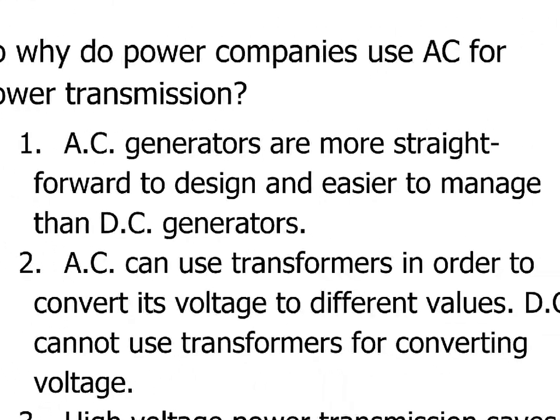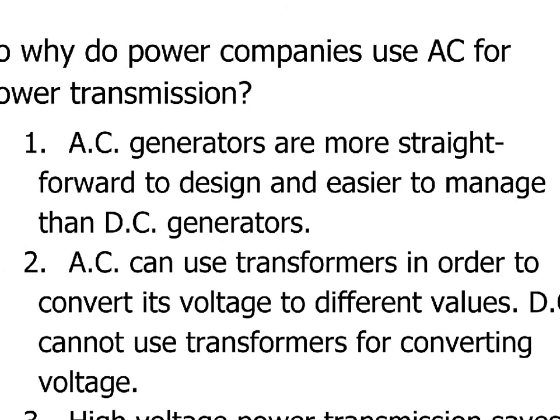There are three really good reasons why alternating current is the preferred way of transmitting power. First, alternating current generators are more straightforward to design and easier to manage than DC generators. An AC generator uses slip rings — just solid rings attached to the ends of the spinning coil of wire — and you hook them into the circuit. For a DC generator or motor, you have to have a commutator, which makes things more complicated. So going with AC is simpler, more straightforward, and less expensive than DC.